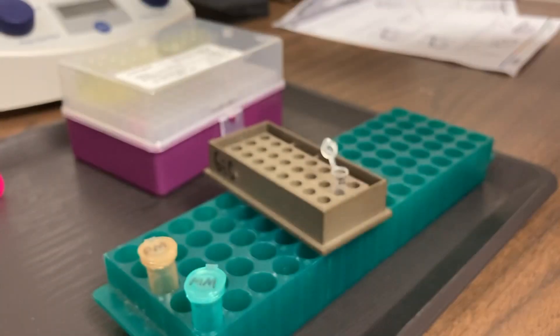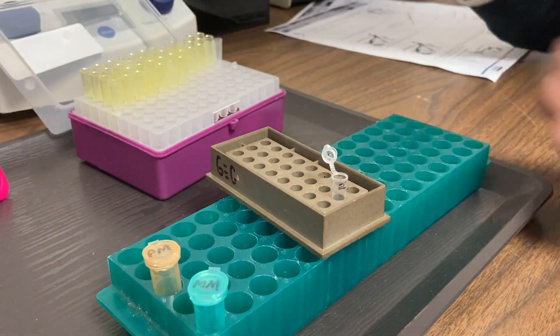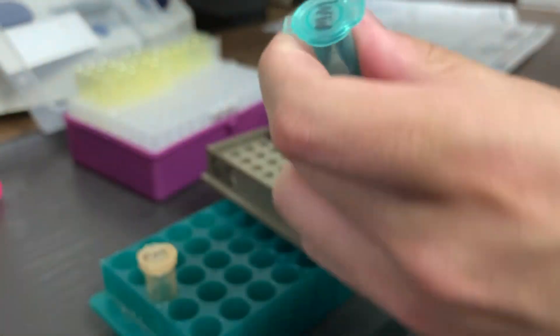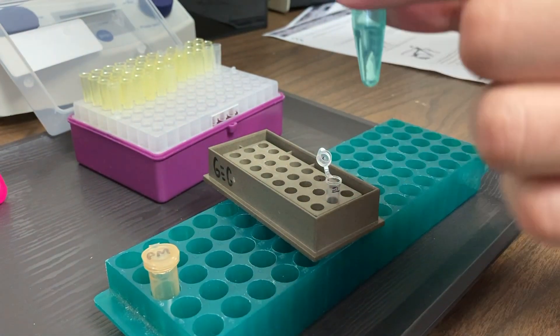Next, we'll set up our PCR reactions. First, we'll set the volume of our micropipet to 20 microliters and we'll add our master mix to our PCR tubes.